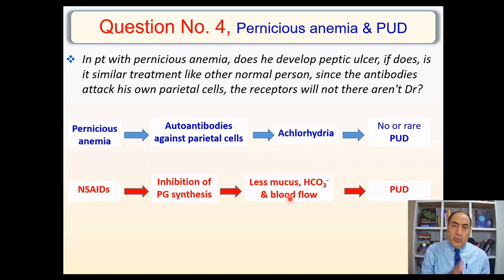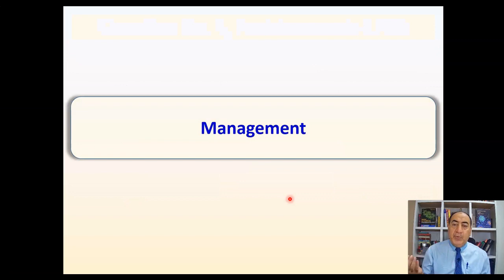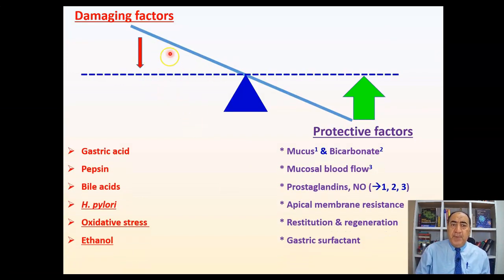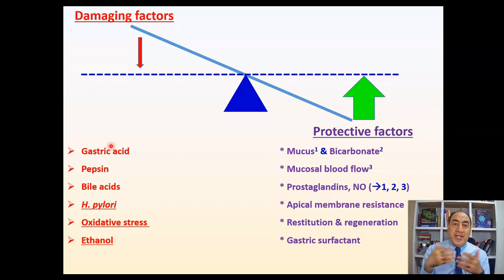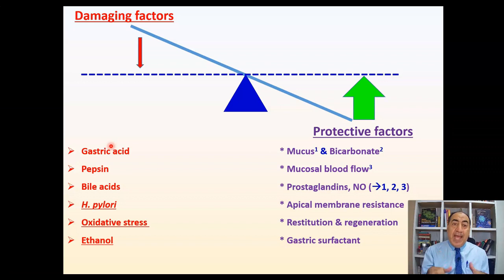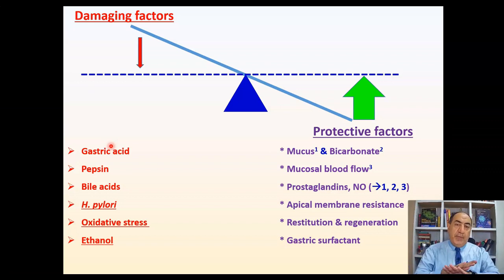Regarding treatment: in these patients, treatment should focus more on protective factors rather than damaging factors. You don't need to inhibit HCL secretion because it's already inhibited. There is no HCL, so why use H2 blockers or proton pump inhibitors? Studies show that over-suppression can enhance bacterial growth and may result in cancer and other issues. There is no need at all to use H2 antagonists or proton pump inhibitors since HCL is already inhibited.